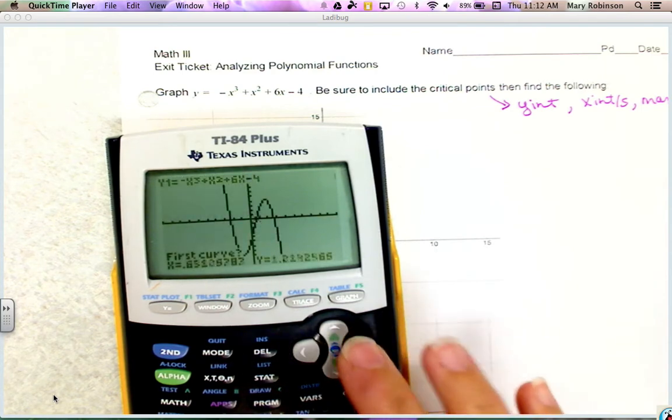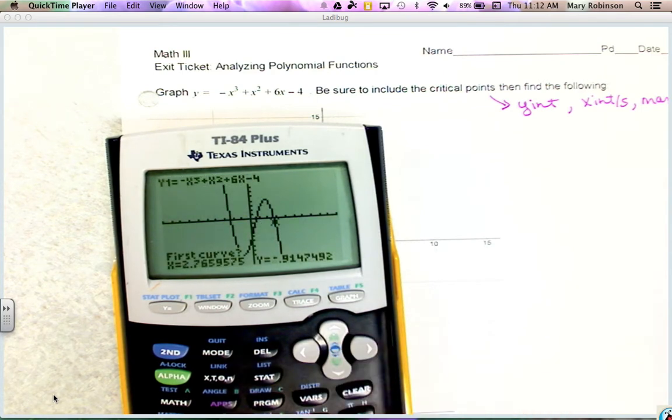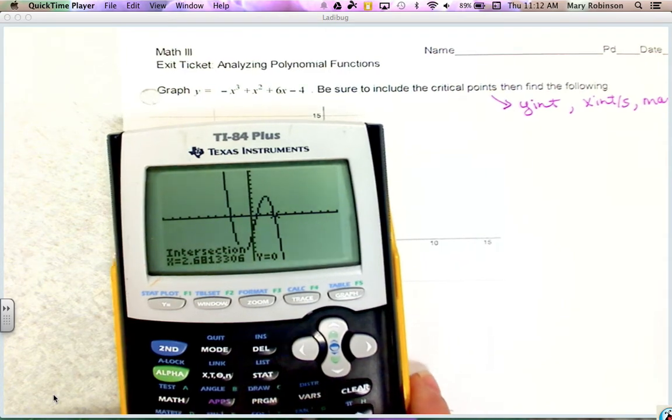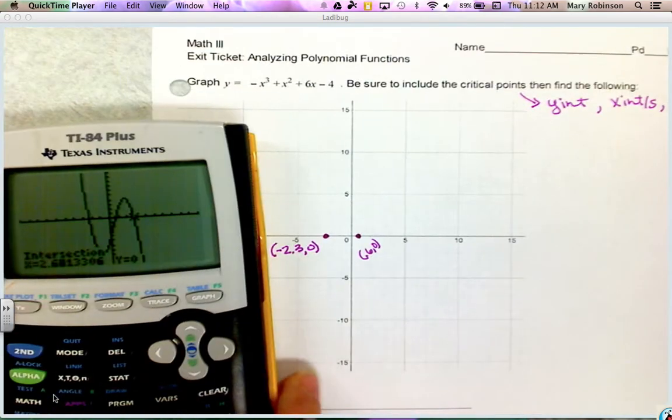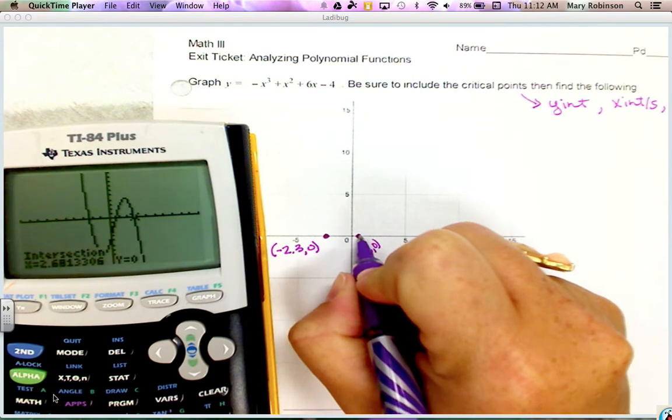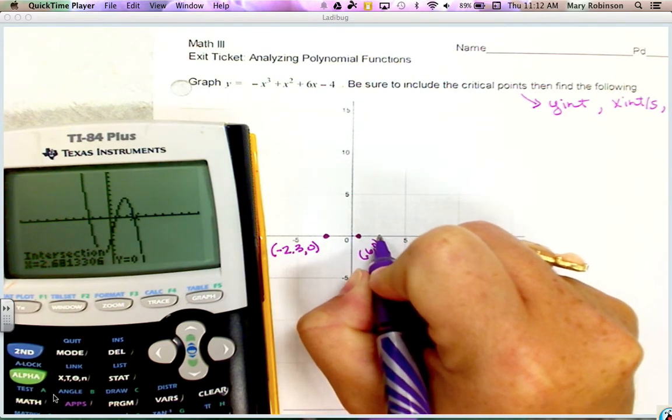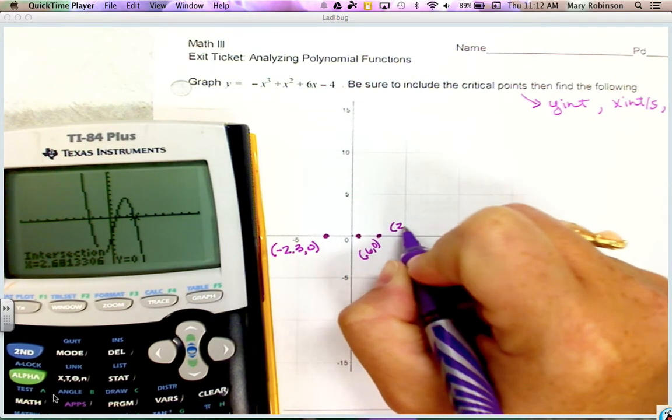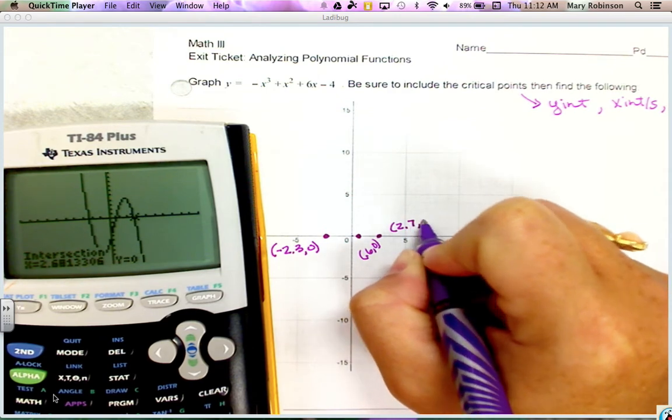Next, moving on: 2nd trace 5 again, enter enter enter, and we have about (2.7, 0). I'm going to go 1, 2, and almost to 3 but not quite, and label that point 2.7, 0.